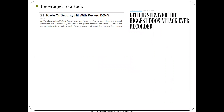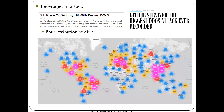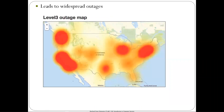This has been leveraged many times to attack things. The two most egregious examples — the highest recorded DDoS attacks when they happened — were one on KrebsOnSecurity as retribution, and another on GitHub. The bot distribution of Mirai shows thousands of machines; the bigger and more red the circle, the more nodes there are. It's everywhere. When you direct this against certain sites, you can cause a whole bunch of outages. Level3, a tier-one ISP, noted that when this happens, it clogs up the pipes pretty well and you get widespread outages.